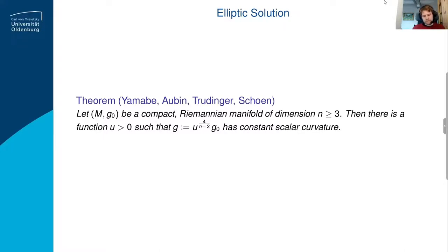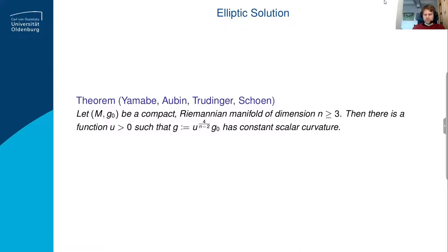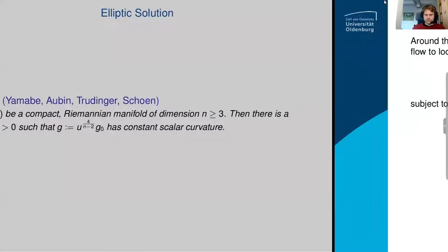The Yamabe problem was solved step by step: partially by Yamabe, then Obata found mistakes in Yamabe's work and filled gaps, with contributions by Trudinger, and Schoen did the final work for the positive scalar curvature case. The combined work shows that if you have a compact Riemannian manifold of dimension at least three, you can always conformally change your metric to get constant scalar curvature — no additional assumptions beyond compactness and smoothness.